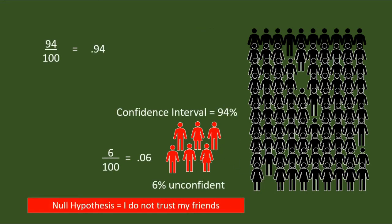Now, this is very bad. I am not sure about 6 of my friends. The confidence interval went below 95%. I cannot hold my statement 'I trust my friends' anymore. I am accepting the null hypothesis: I do not trust my friends.